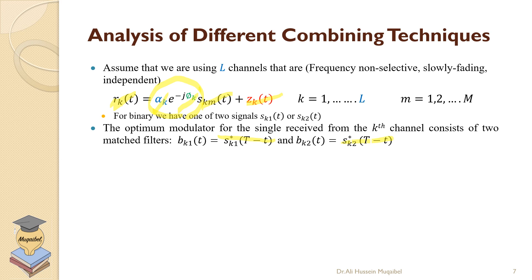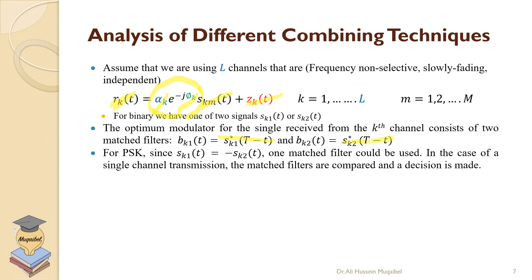So s_{k1} equals minus s_{k2}, and one matched filter could be used in this case. In a single channel transmission, the matched filters are compared and a decision is made.